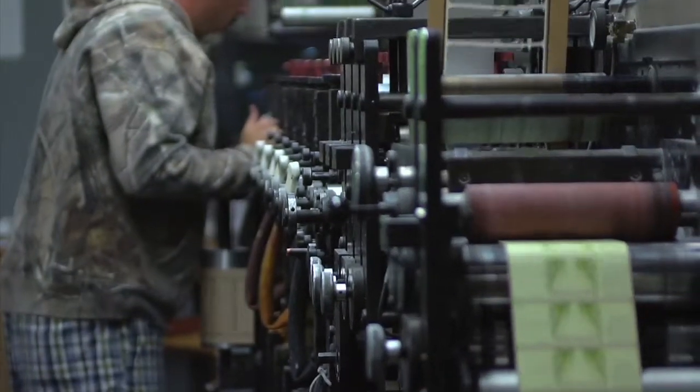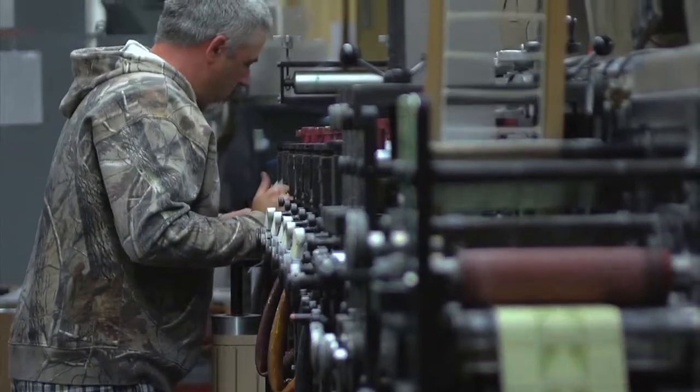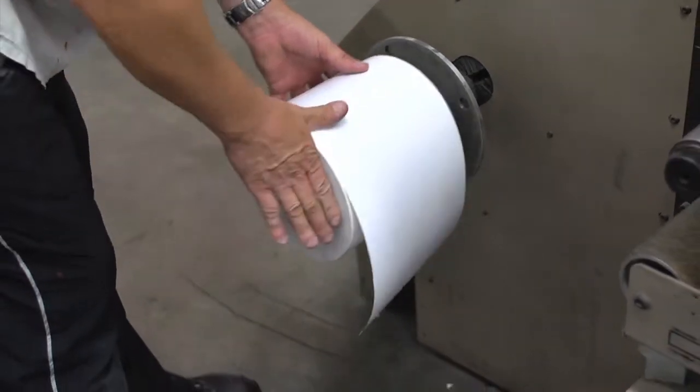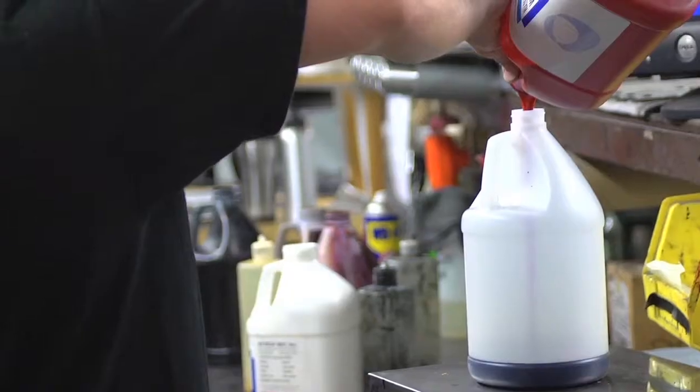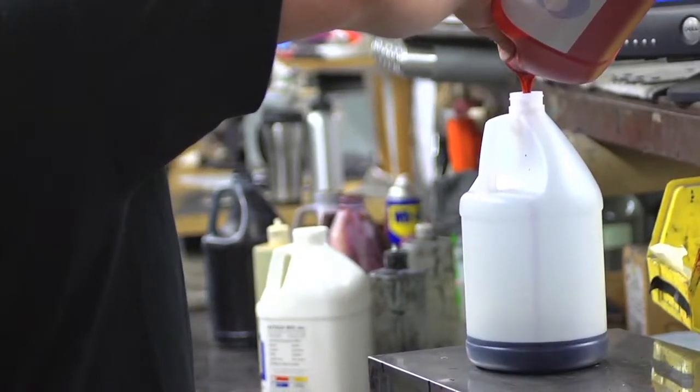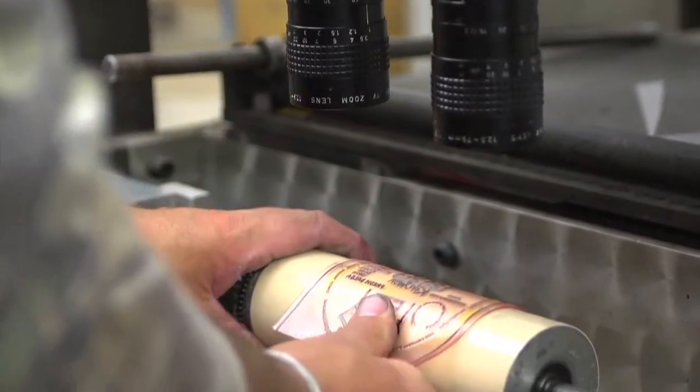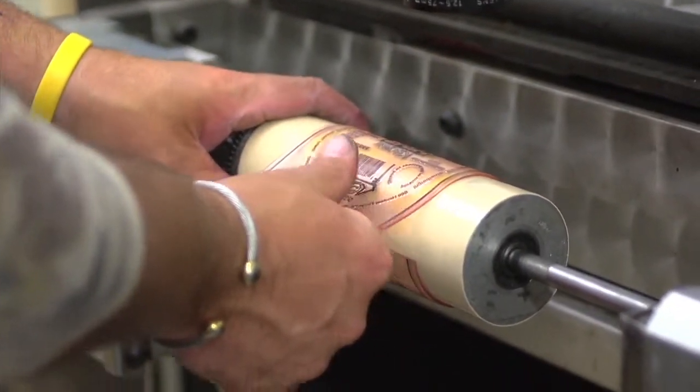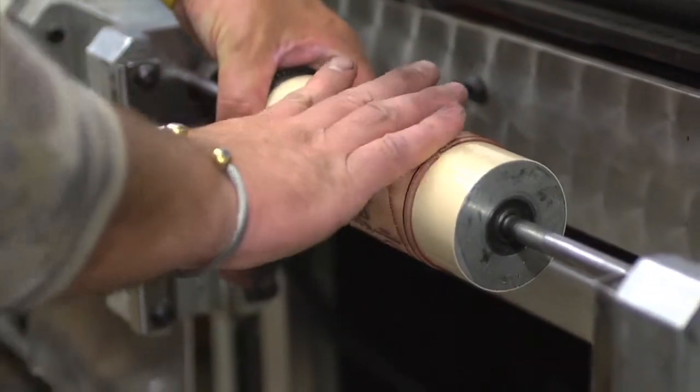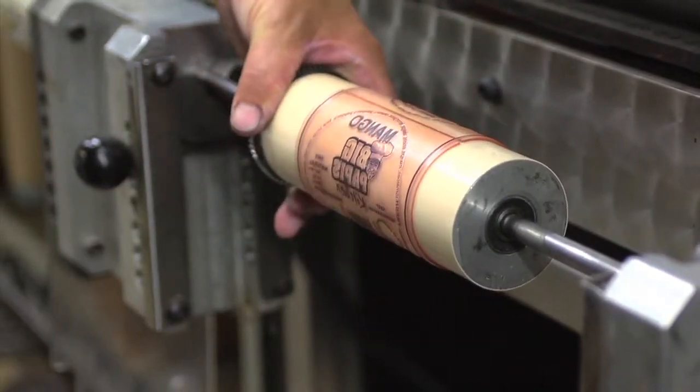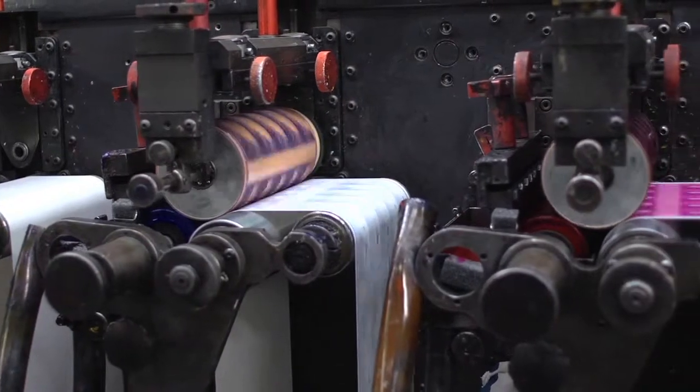Now it's time to start the flexographic presses. Material is loaded onto the press. Colors are prepped in the color bins. Plates are perfectly placed onto the cylinder heads, and the die that cuts the shape of your label is added. Each plate picks up a color and puts it down.